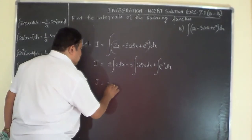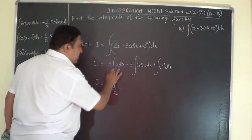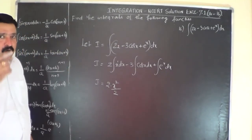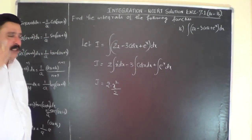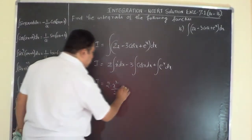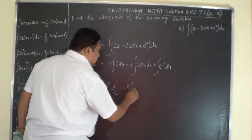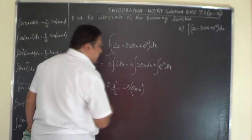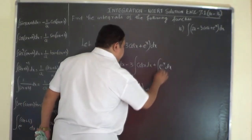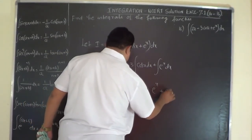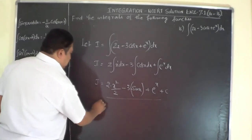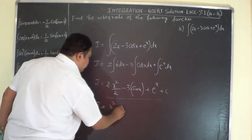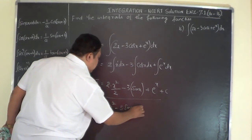So I equals 2 times x²/2. You know why it is x²/2? Because x has got power 1, and using the power rule: x^(1+1) / (1+1), that is x²/2. Minus 3 into sin x — because the integration of cos x is sin x — plus e^x, because the integration of e^x is e^x itself. We can simplify this: the 2s cancel to give x² minus 3 sin x plus e^x plus C. That's the answer.